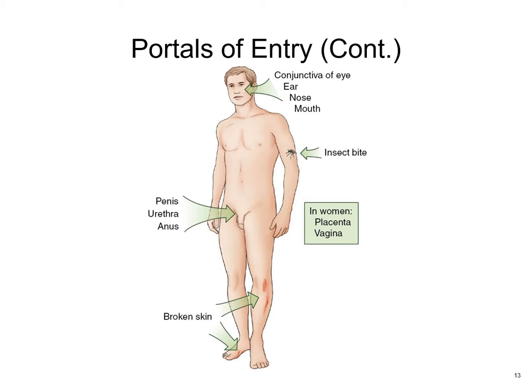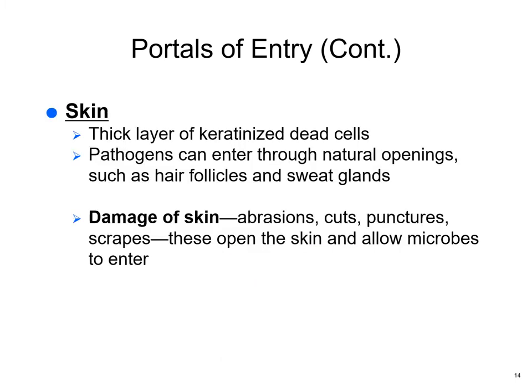Examples of portals of entry include the conjunctiva, ears, nose, mouth, and insect bites. In women, the vagina and placenta — placental infection can come vaginally and travel up into the uterus, but more likely it comes from the bloodstream. In men: the penis, urethra, and anus. Broken skin, ingrown toenails, and any abrasions are also portals of entry. Skin is a thick layer of keratinized dead cells, but pores, hair follicles, and sweat glands can become infected, and damaged skin certainly can.